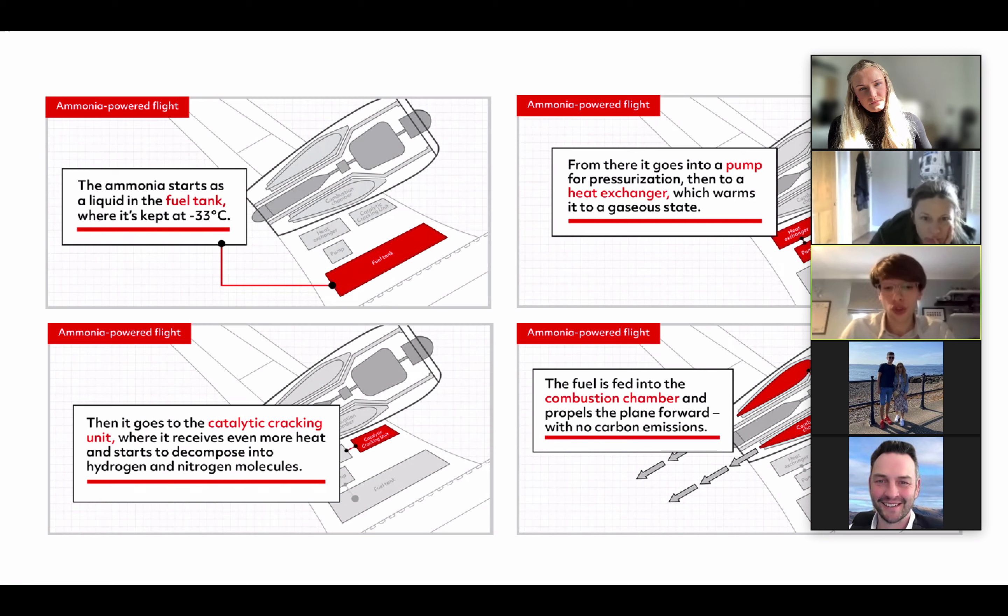Looking at the graphical depiction shown, I'll try and give a quick rundown of what's actually happening when a plane is fuelled by ammonia. So ammonia starts as a liquid in the fuel tank, kept at minus 33 degrees Celsius. It's then pumped for pressurisation before heading to the heat exchanger where it is warmed into a gaseous state. Then it's sent to the catalytic cracking unit, which receives even more heat and is split or cracked into hydrogen and nitrogen molecules. The chemical mix is then ignited in the combustion chamber, which produces thrust.